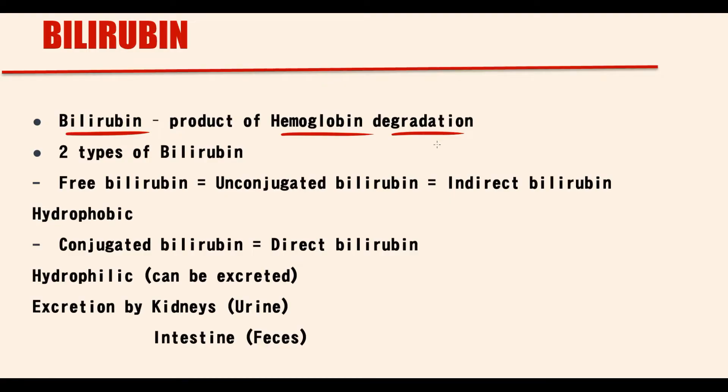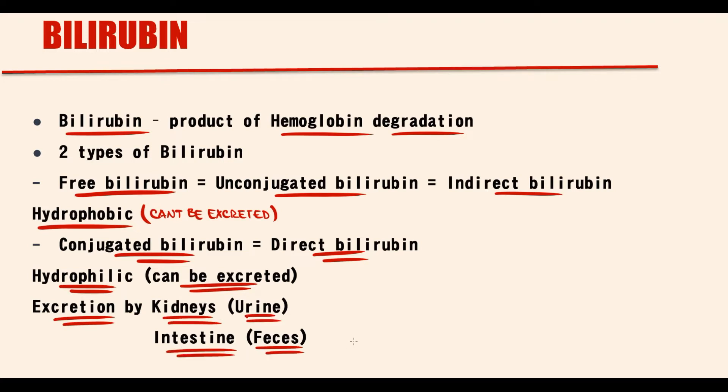In the blood we have two types of bilirubin: free bilirubin or indirect bilirubin, and conjugated bilirubin or direct bilirubin. The only bilirubin that can be excreted from the organism is conjugated bilirubin, because only conjugated bilirubin has hydrophilic properties. Conjugated bilirubin is excreted by the kidneys into the urine and by intestine into the feces.